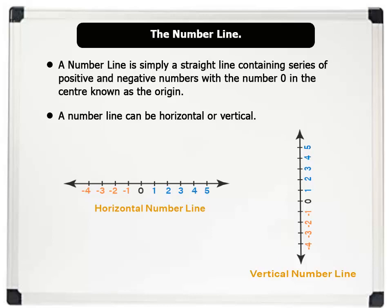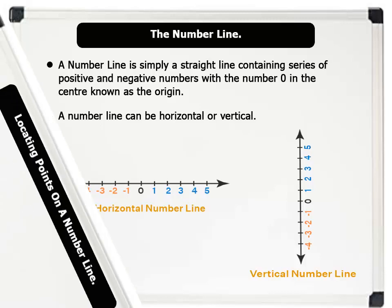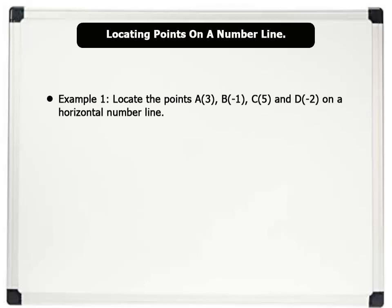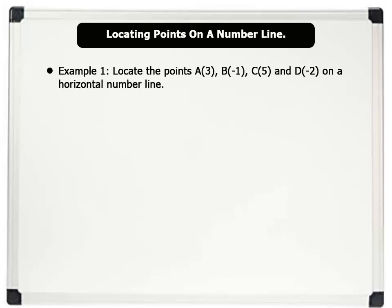Let us now solve some problems. Locating points on a number line. Example 1. Locate the points A3, B minus 1, C5, and D minus 2 on a horizontal number line. Solution.